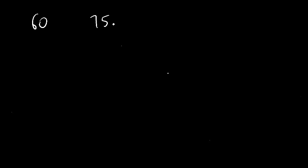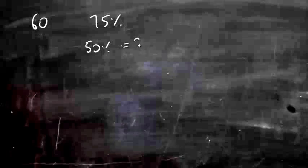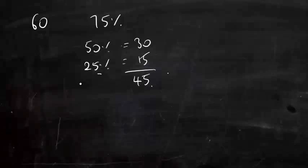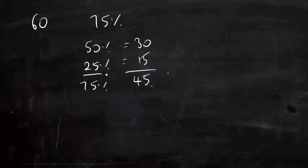A test is marked out of 60. Pupils need 75% to achieve grade A. How many marks is this? 50% of 60 is 30, and 25% would be 15. Add them together to get 45 marks, which is 75%.